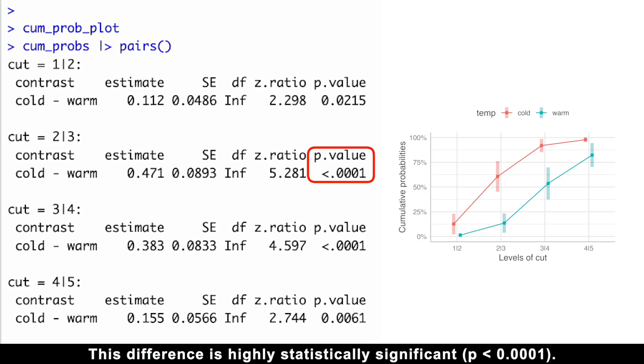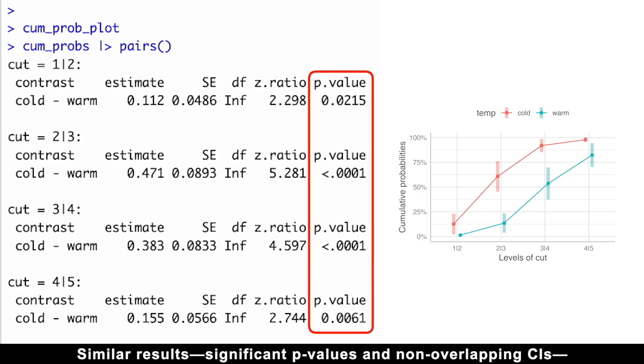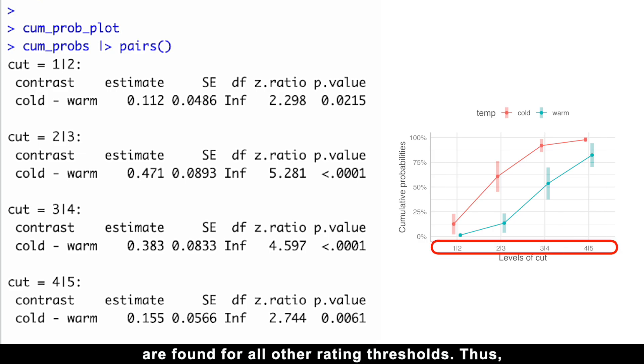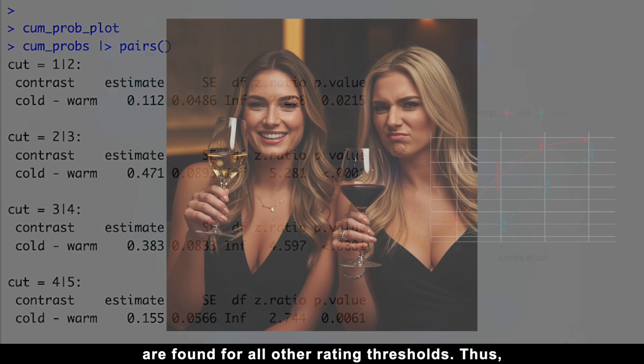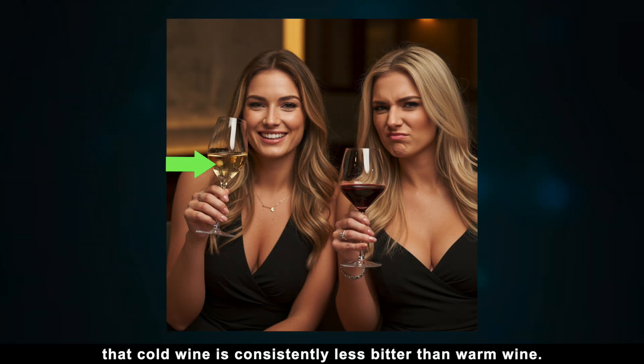This difference is highly statistically significant. Similar results, significant p-values, and non-overlapping confidence intervals are found for all other rating thresholds. Thus, we confidently conclude that cold wine is consistently less bitter than warm wine.